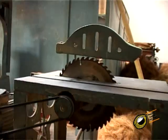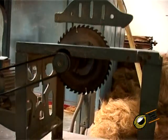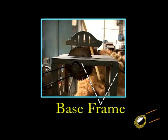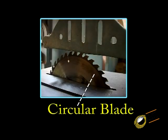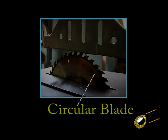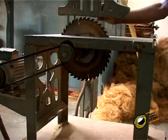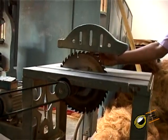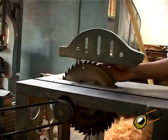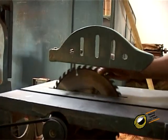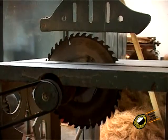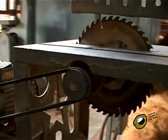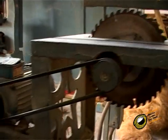The circular saw consists of a circular blade having saw teeth. The parts of the circular saw are: Base Frame, Teeth, and Circular Blade. The cutting process for brush making happens while the blade is rotating.